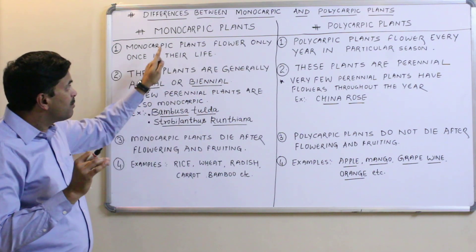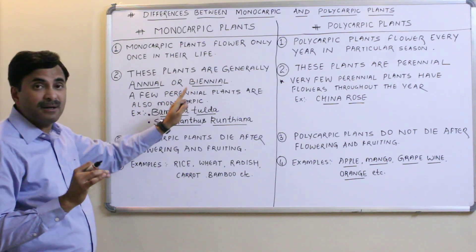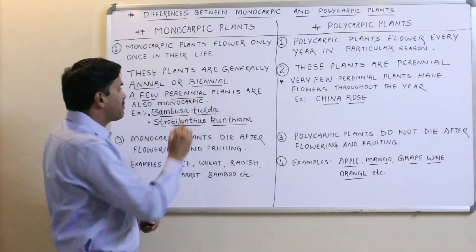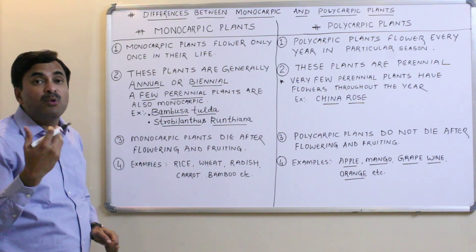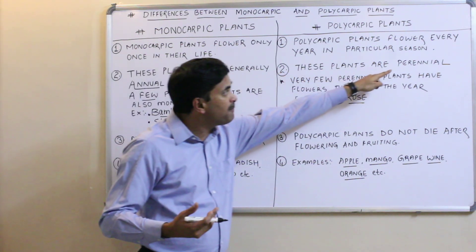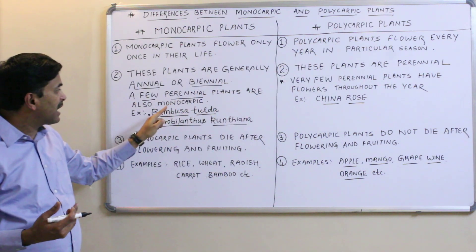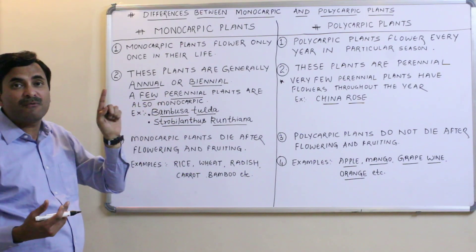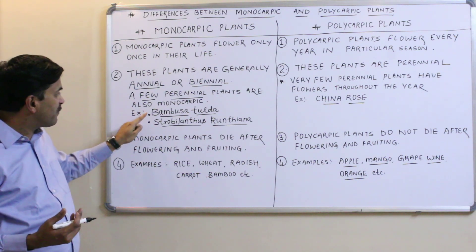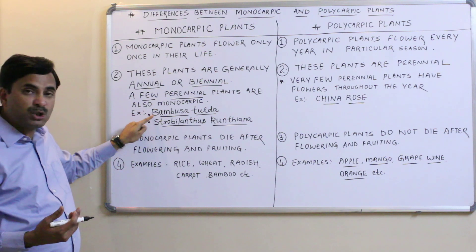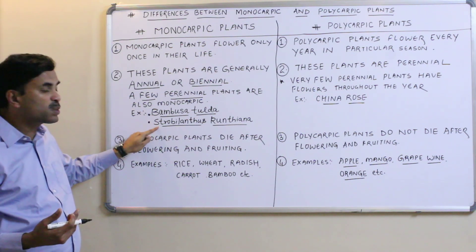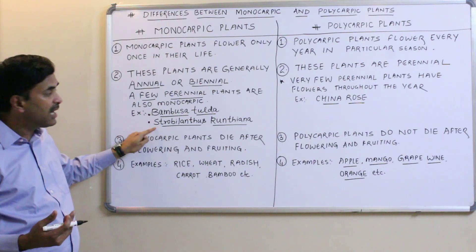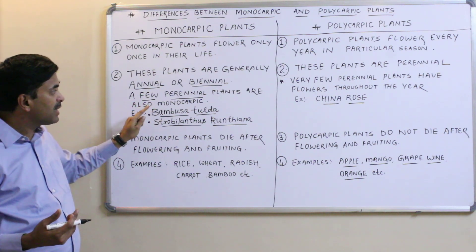Exceptionally, there are a few perennial plants which are also monocarpic. Generally, perennial plants are polycarpic, but there are few perennial plants which are monocarpic — meaning they flower only once in their lifetime. Two examples are bamboo (Bambusa tulda) and Strobilanthus kunthiana.